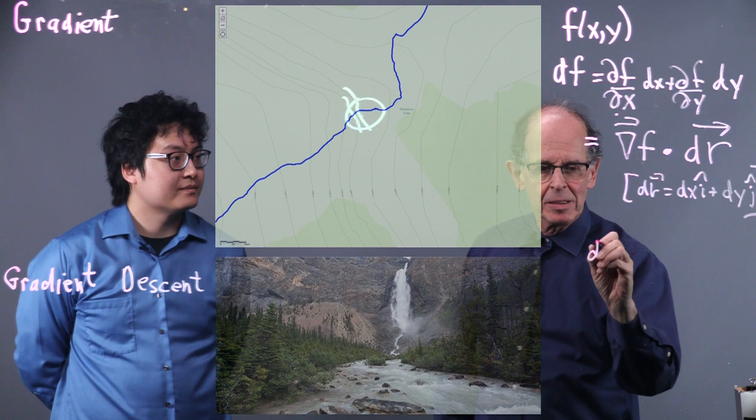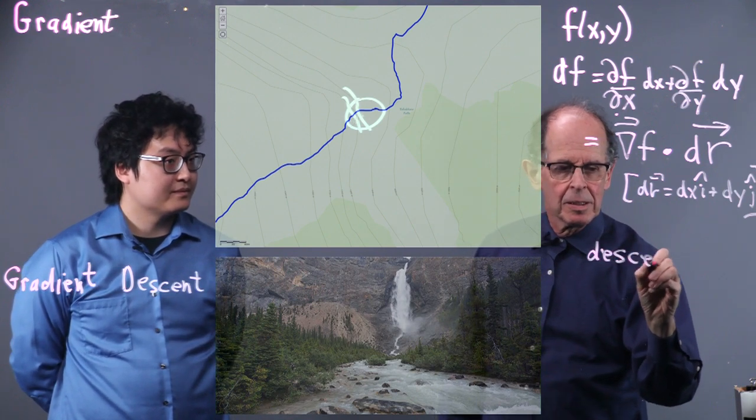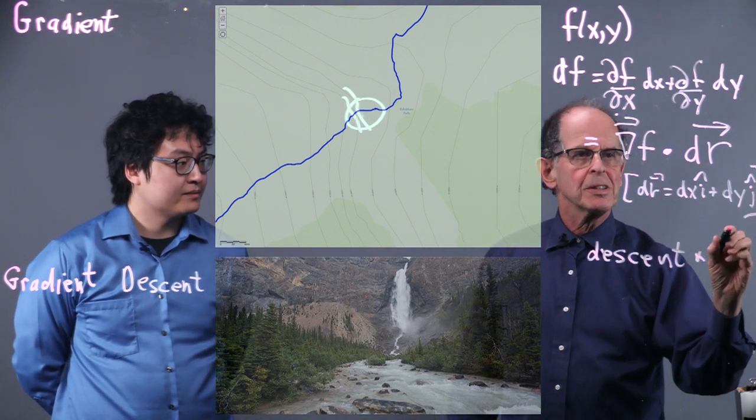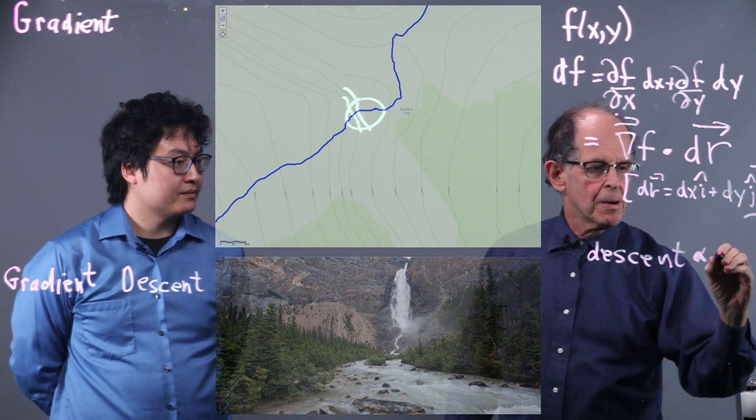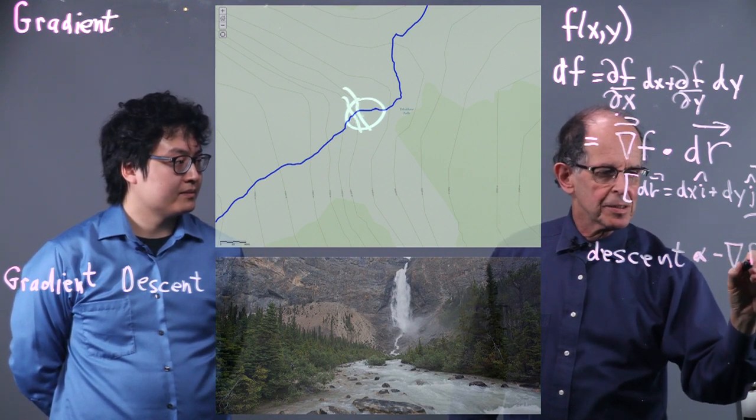Descent would just be the negative of that. So descent is proportional to minus gradient of F.